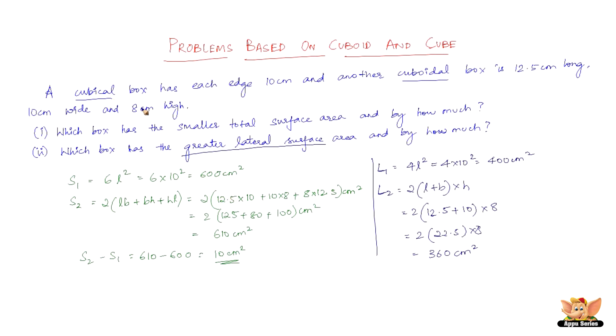The cubical box has the greater lateral surface area and by how much? The difference between the two is 40. So, 400 minus 360 equals 40 cm square. The cubical box is greater in terms of lateral surface by 40 cm.